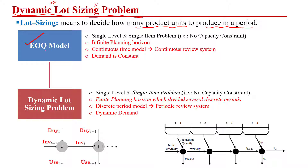In the basic EOQ model, we are considering a single product with no capacity restriction, but the planning horizon we were considering was the infinite planning horizon — meaning this cycle is going to continue for an infinite time period.